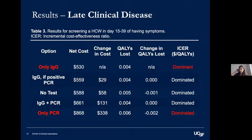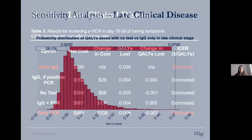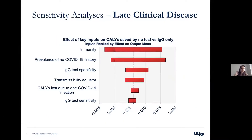Assuming full immunity is conferred, only IgG testing is the dominant option for screening people in late clinical disease. However, looking at sensitivity analyses, IgG testing is not always dominant. A Monte Carlo simulation with 10,000 iterations shows that no testing leads to more QALYs saved than IgG testing in over 70% of iterations. A tornado graph shows the outcome was most sensitive to immunity conferral and prevalence. At around 70% immunity — meaning a 70% reduction in reinfection risk upon exposure — no testing starts to become more beneficial than IgG testing.